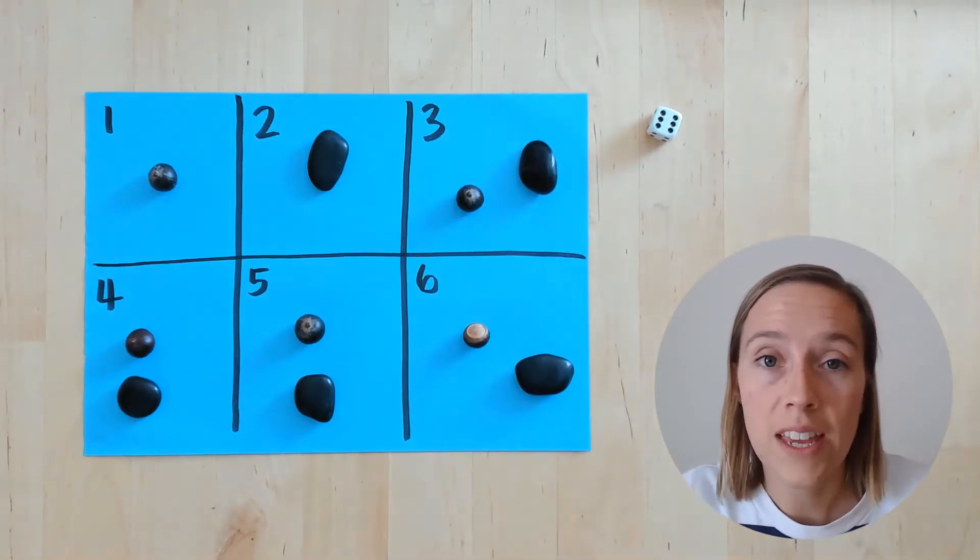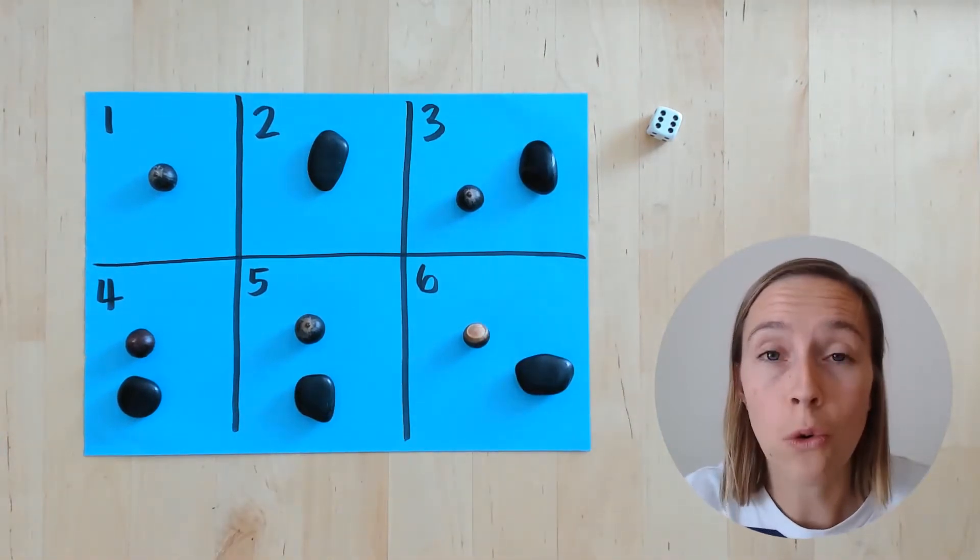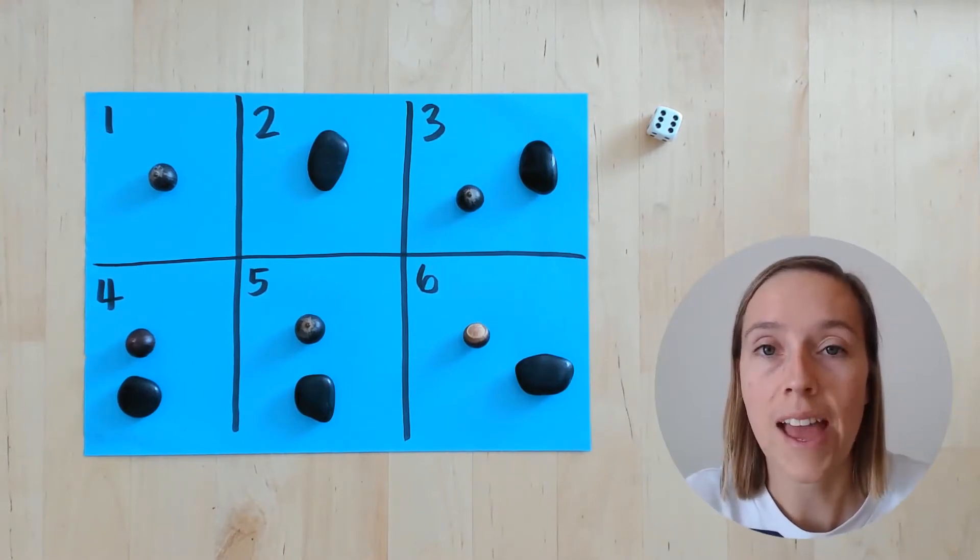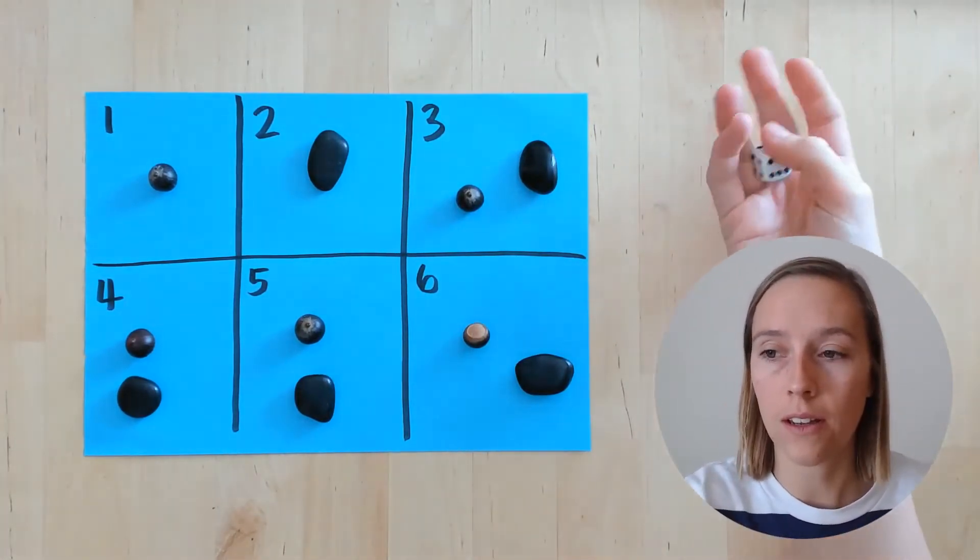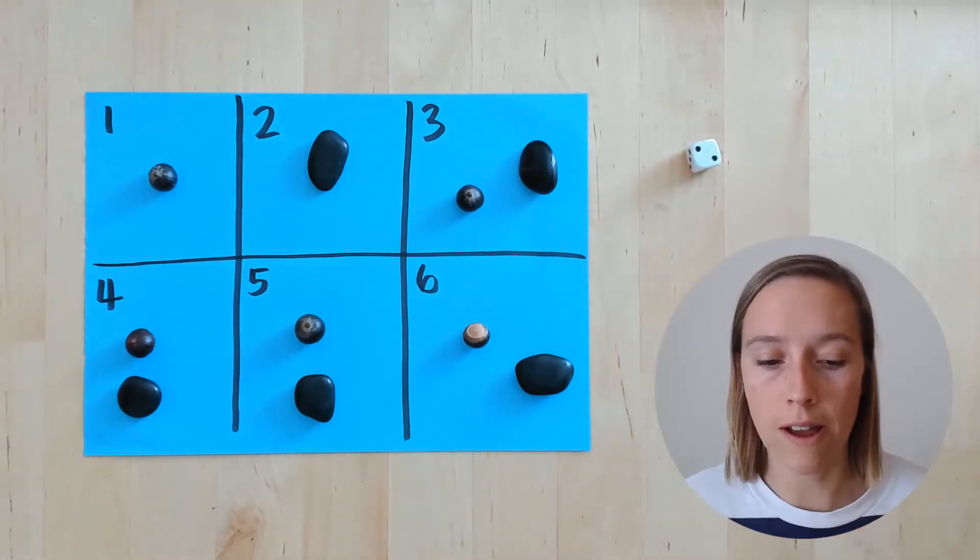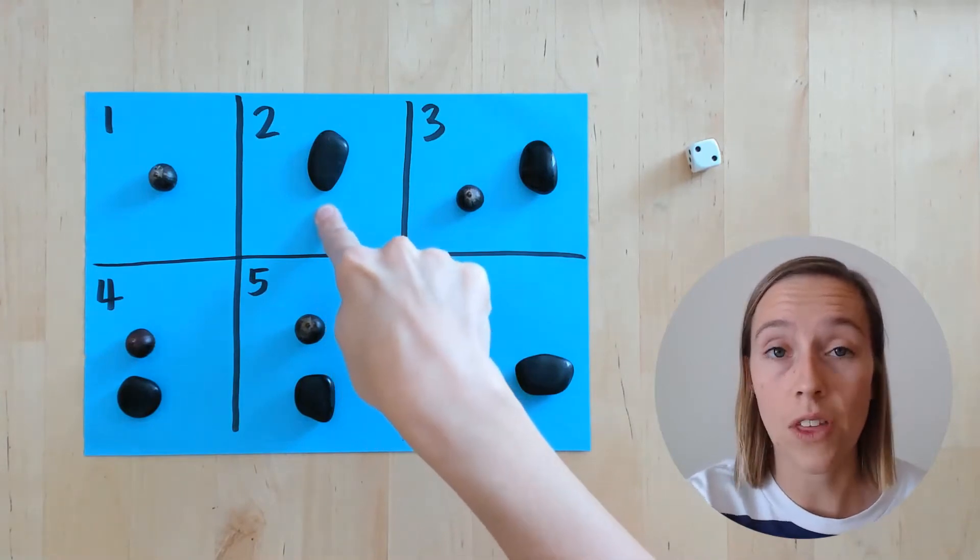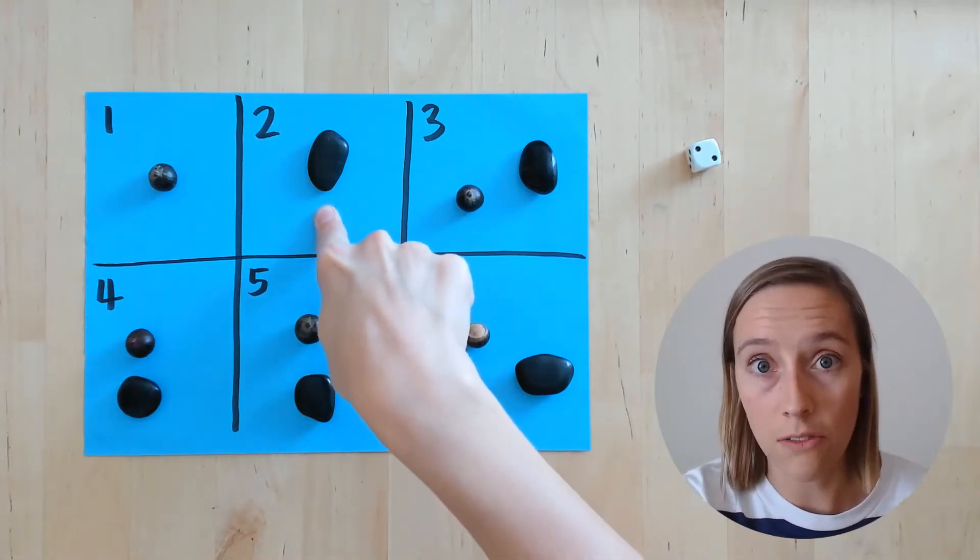Now the object of the game is to clear the board of all of your counters. So if the acorn person goes first, they're going to give their dice a shake, drop it on the ground, two. So there aren't any acorns on number two. The acorn person doesn't get to take any off the board.